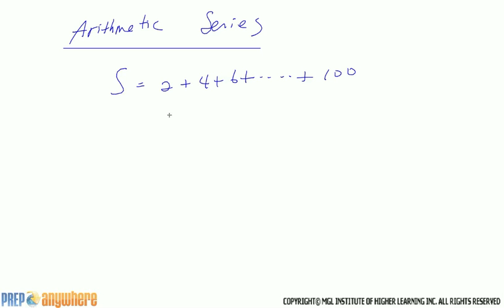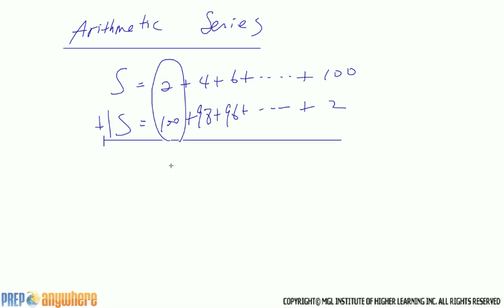So this is how Gauss added this. He was like, oh hey, if I list it backwards, every time I add vertically I get the exact same number.